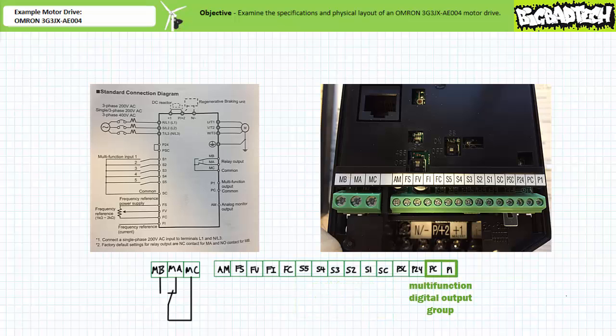Similarly, the multi-function digital output group consists of a single user programmable switched output P1 and a common PC. Depending on how the motor drive is programmed, this switched output can perform several different functions. By default, P1 is normally open; however, a user can change this deactivated state to normally closed.